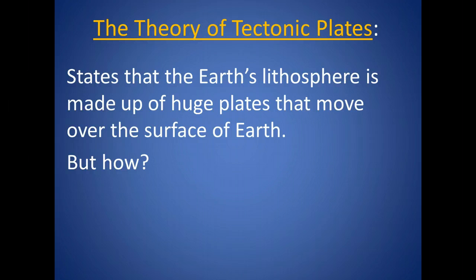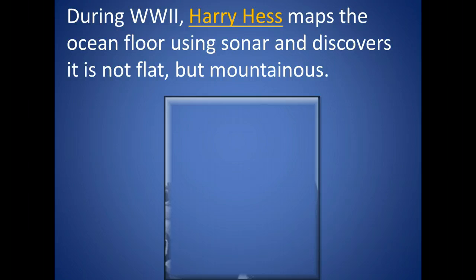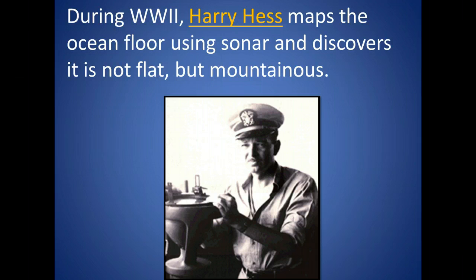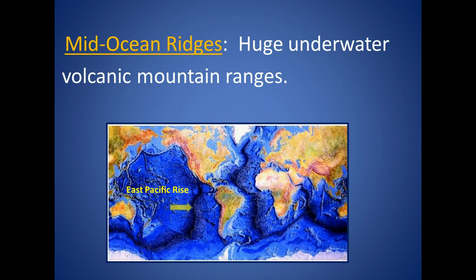Our story begins back in World War II. Harry Hess was a Navy captain of an assault transport ship, but he was a geologist at heart. Traveling from battle to battle, Hess would take surveys of the ocean floor using sonar. Back in the 1940s, people believed that the ocean floor was flat. But Hess found out that the ocean floor was not flat at all — it had huge underwater mountain ranges. These mountain ranges are called mid-ocean ridges. There are two main ridges that go all the way around the world: the East Pacific Rise, which goes through the Pacific Ocean, and the Mid-Atlantic Ridge, which goes through the Atlantic Ocean.